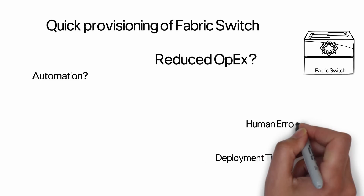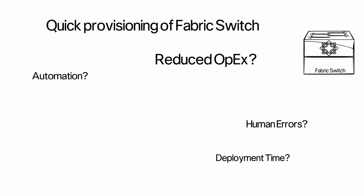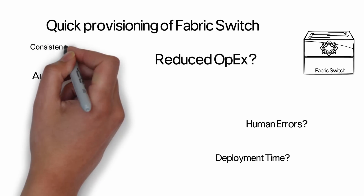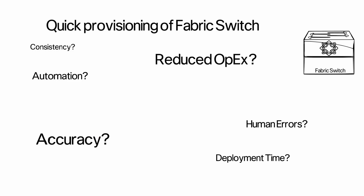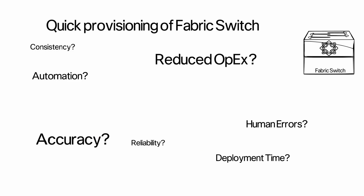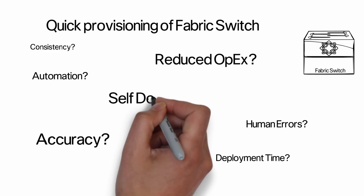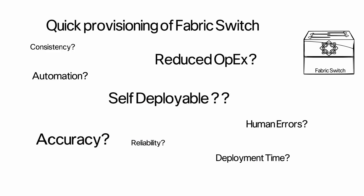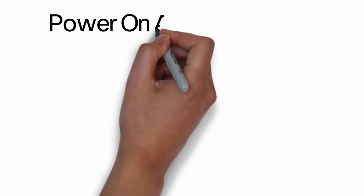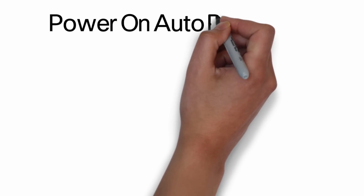Deployment time is reduced, human error eliminated. Moreover, how to make it accurate, consistent, and reliable — for the configuration which is mostly repetitive, could the fabric switches be self-deployable? Well, the answer is yes, through Cisco's Power On Auto Provisioning, or the POAP feature.